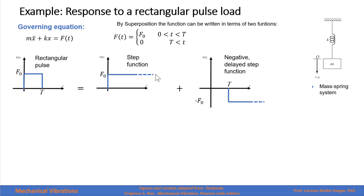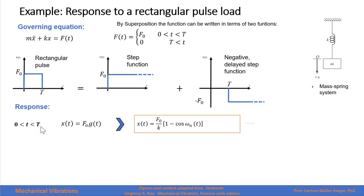We can convert our rectangular pulse into a step function that goes to infinity, valid only for times less than capital T. When we have times greater than capital T, we add a negative delayed step function that cancels out that part of the step function, giving us a zero function. So these two functions are equivalent to the original function.